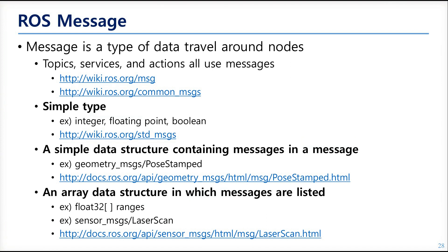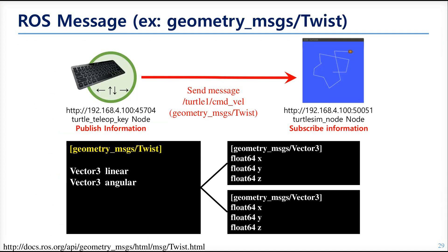Here are some examples of frequently used messages. The message we used in the test was a Twist from the geometry_msgs package. Twist consists of two Vector3 type members: the linear and the angular, representing linear velocity and angular velocity. Vector3 is also a message from geometry_msgs, and consists of three float64 members representing velocity on each axis. As you can see, messages can be customized by combining other messages.